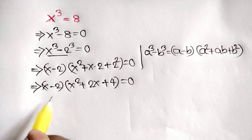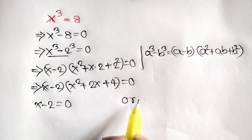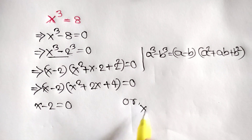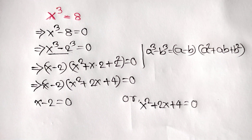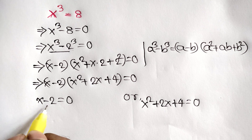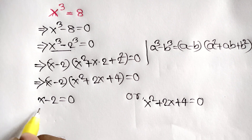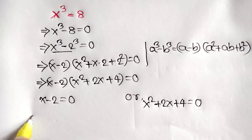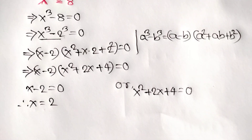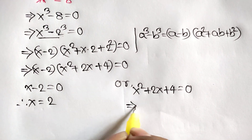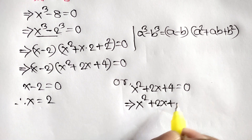From here we have two solutions: x minus 2 is equal to 0, or x square plus 2x plus 4 is equal to 0. Taking negative 2 to the right side, the value of x is equal to 2.